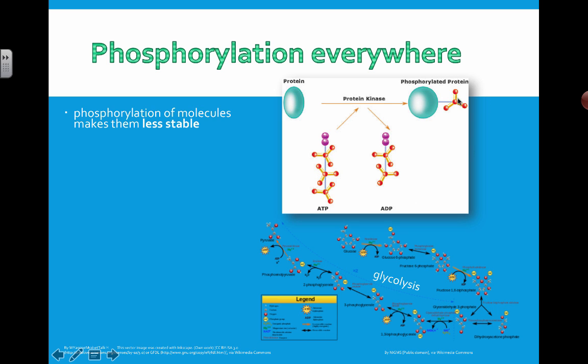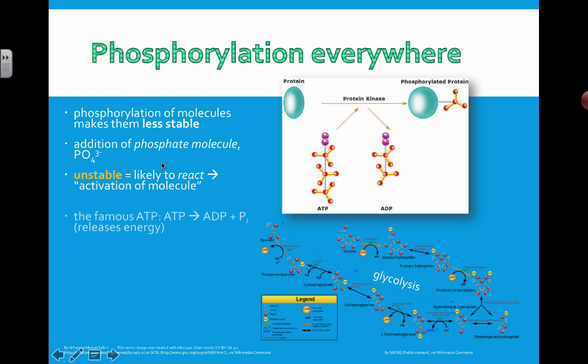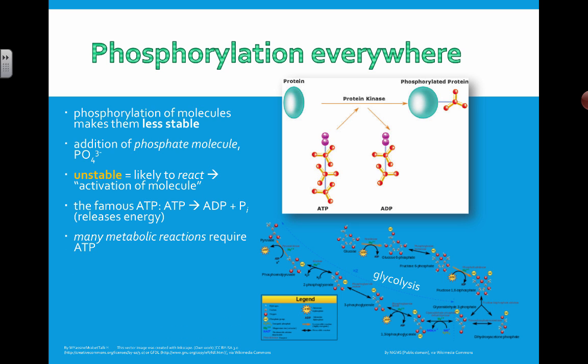When you phosphorylate a molecule, it makes it less stable. If it's less stable, then it becomes more likely to react. So you've pretty much activated the molecule. Adding energy to it has activated the molecule. The phosphate ion is actually PO4 three minus, but that's rarely going to come up. But we are phosphorylating something to activate it because we've made it less stable.